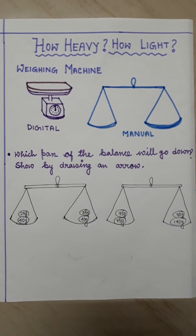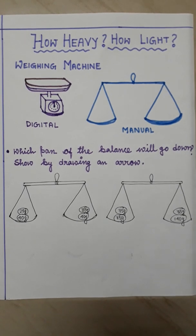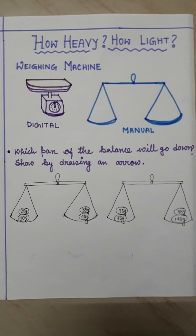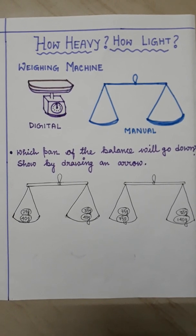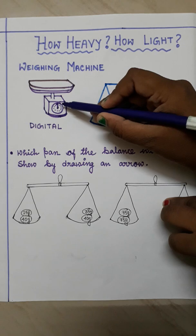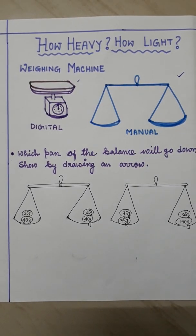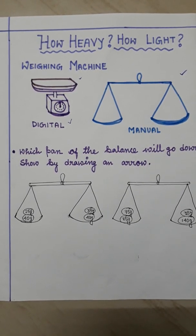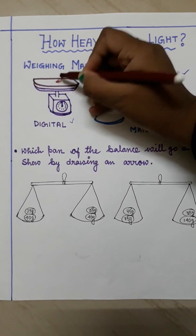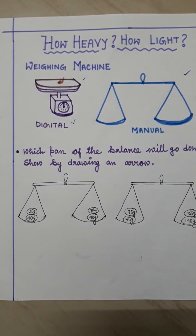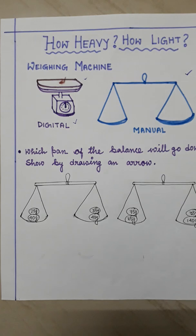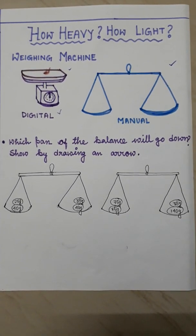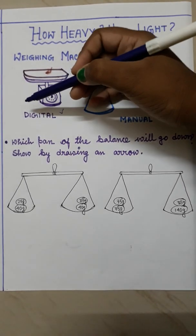Weighing machines are those machines which are used to measure the weight of different materials. I think you have seen this type of weighing machines in market or shops. These are digital weighing machines. If you keep any material here, the weight will show here. There will be a needle and this needle will deflect to show the weight of the item. These are digital weighing machines.